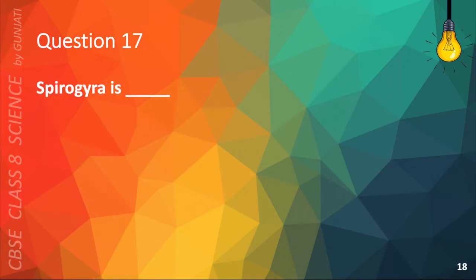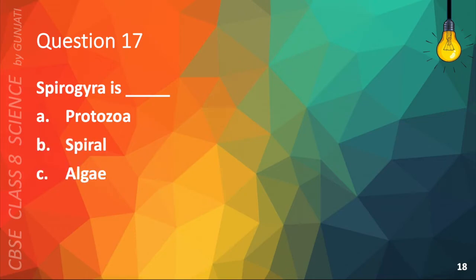Question 17. Spirogyra is: A. Protozoa, B. Spiral, C. Algae, or D. Infinite. The correct answer is C. Algae. The following points will help you answer questions on microorganisms.